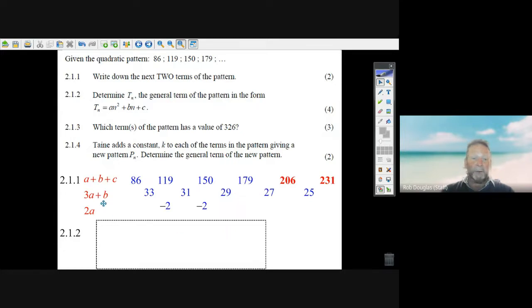Then it says determine the general term. And we've got this trick where we let 2a equal minus 2, 3a plus b equal 33, a plus b plus c equals 86. And you just learn this thing: 2a equals minus 2. You solve that equation, divide by 2, you get a is minus 1. Now that you know a, you put it back in.